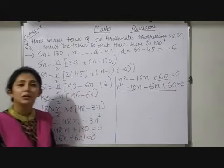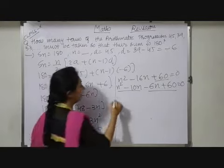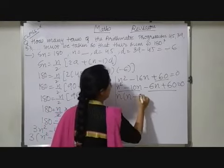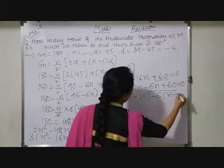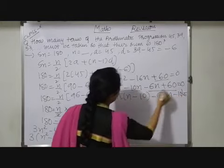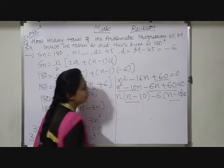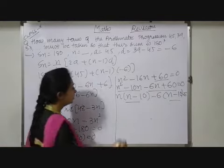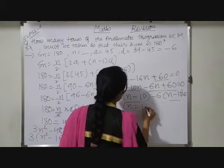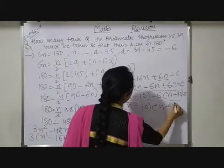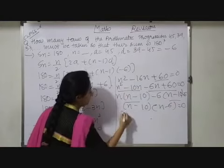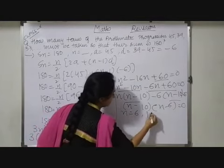Like that we will group. So here N will be common. So N minus 10, from here minus 6 will be common. So now we have N minus 10 equals to 0. Now observe N minus 10, N minus 10 will be separated out. So I have N minus 10 and N minus 6 equals to 0. It means N equals to 6 and 10.